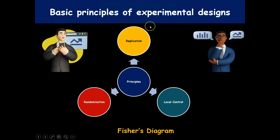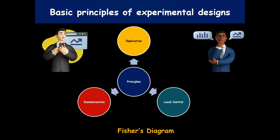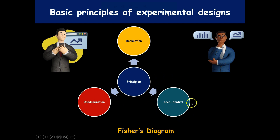There are three important basic principles involved in designing an experiment, and they play a very important role when implementing different experimental designs. The first one is replication — the repetition of the treatment. The second one is randomization — the random allocation of treatments. The third one is local control, which is used to convert heterogeneous experimental material into homogeneous material.